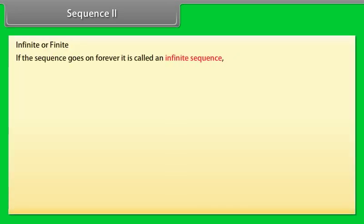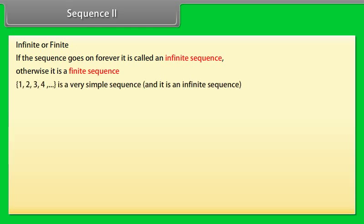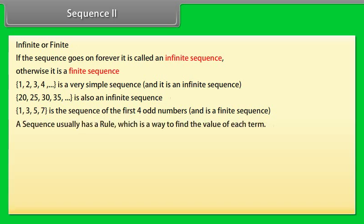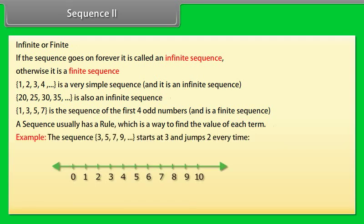If the sequence goes on forever, it is called an infinite sequence; otherwise, it is a finite sequence. For example: 1, 2, 3, 4, and so on is a very simple infinite sequence. 20, 25, 30, 35, and so on is also an infinite sequence. 1, 3, 5, 7 is the sequence of the first four odd numbers and is a finite sequence. A sequence usually has a rule, which is a way to find the value of each term. For example, the sequence 3, 5, 7, 9, and so on starts at 3 and jumps by 2 every time.